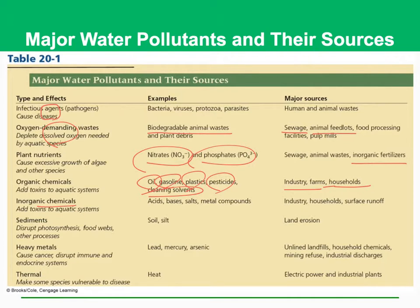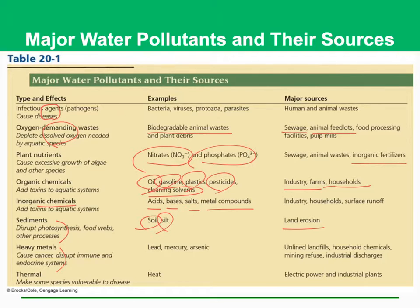Inorganic chemicals can also add toxins to aquatic systems. Acids, bases, salts, and metal compounds such as heavy metals are problems. Sediments can disrupt photosynthesis because they can prevent the penetration of light into water bodies, and this can also disrupt food webs and other processes. Soil sediments are a major problem caused by land erosion. Heavy metals such as lead, mercury, and arsenic are very toxic, can cause cancer, disrupt immune systems, and interrupt endocrine systems.